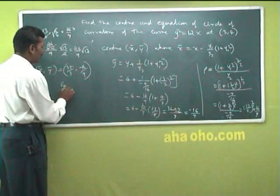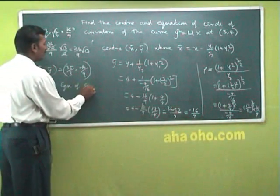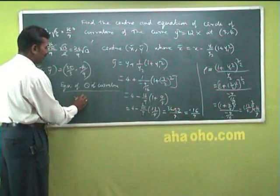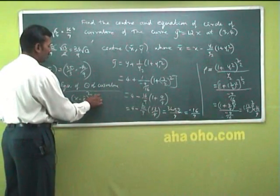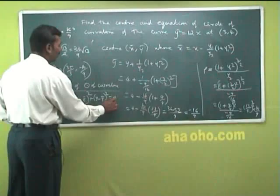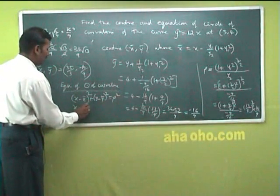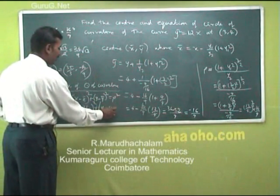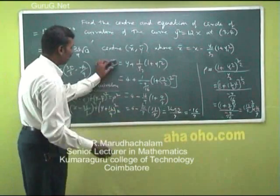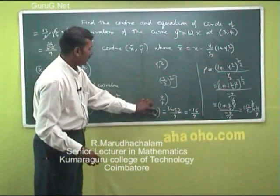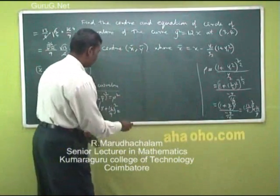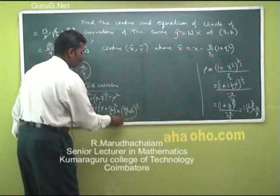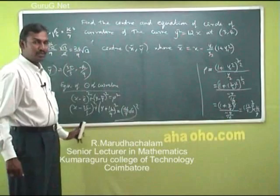The equation of the circle of curvature is: (x − x̄)² + (y − ȳ)² = ρ². Substituting: (x − 35/3)² + (y + 16/9)² = ρ², where ρ = (26/9)√13. So (x − 35/3)² + (y + 16/9)² = [(26/9)√13]², which is the equation of the circle of curvature.